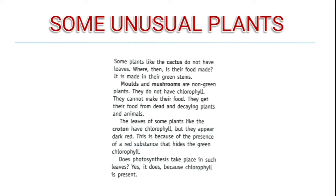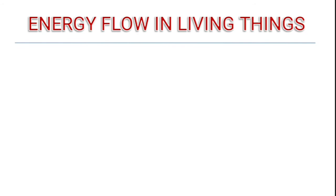The leaves of some plants, like croton, have chlorophyll but are not green in color — they may be red. That doesn't mean they lack chlorophyll. Some leaves are red in color but do have chlorophyll; the reason they don't look green is that other red pigments hide the green color of the chlorophyll. Photosynthesis still takes place in these leaves because chlorophyll is present, even though it is not visible.